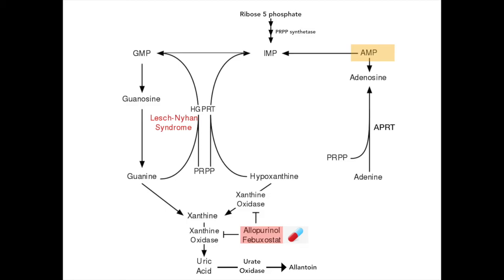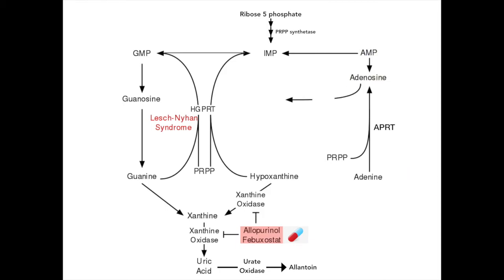However, if we want to rid the body of adenine, then AMP must first be converted into its nucleoside form adenosine, and then afterwards to inosine, by the enzyme adenosine deaminase, or ADA for short. Once it becomes inosine, it can then follow the same pathway to be rid of by the body: converted to hypoxanthine, then xanthine by XO, then uric acid, and finally allantoin.